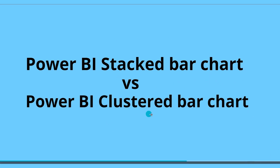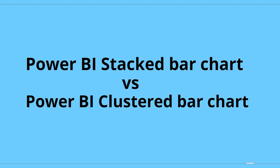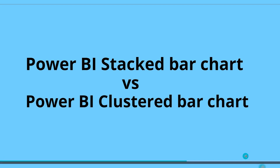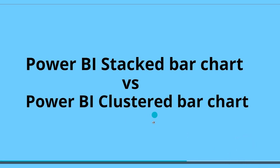The clustered chart is used to compare the totals and values for all the categories as well as the subcategories. And it is possible to use the constant line, minimum line, maximum line, and average line in the clustered bar chart.